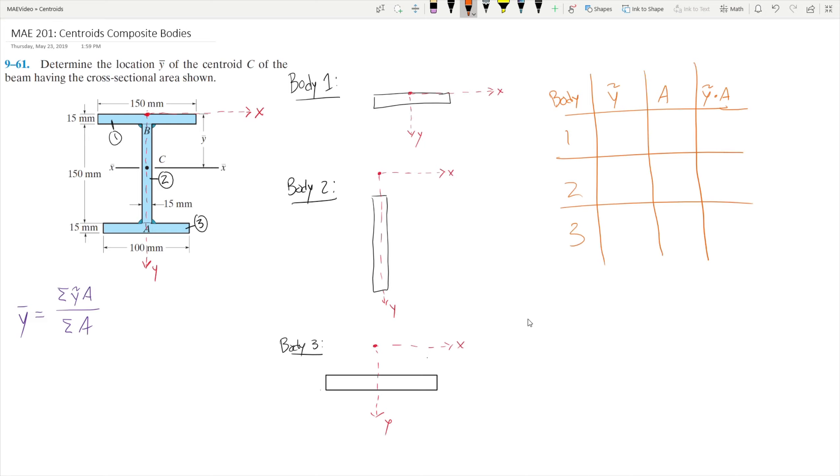Now that we have our table set up, let's find these centroids. Let's focus on body number 1 first. Since this is a rectangle, we know the centroid is going to be half the distance from each end. Since we're only solving for y-bar, we only need to look at the perpendicular distance from the x-axis to the centroid. In this case, since the height is 15mm, the centroid will be 7.5mm away from the x-axis.